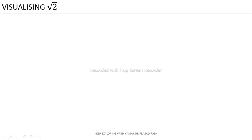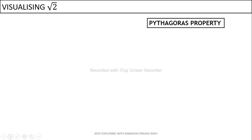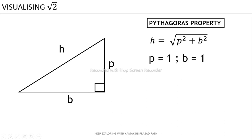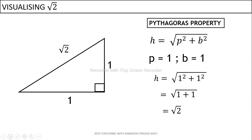For this we use the Pythagorean property, considering a right angle triangle where p is the perpendicular, h is the hypotenuse, and b is the base. The Pythagorean property states that h equals root over of p squared plus b squared. So if we take the perpendicular as one unit and the base as one unit, then according to the property we get the hypotenuse as root 2.